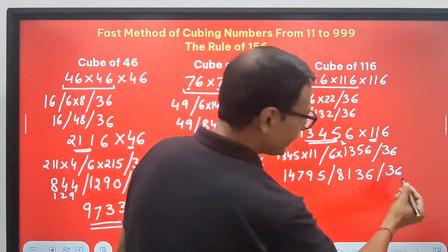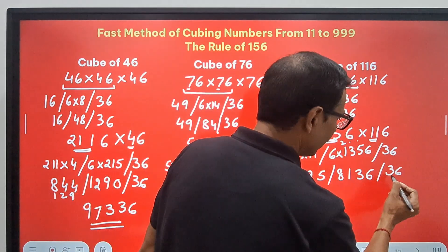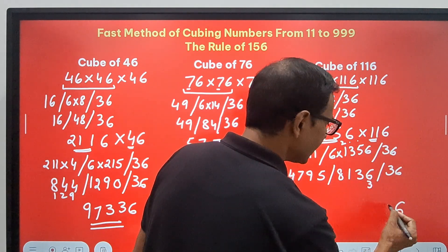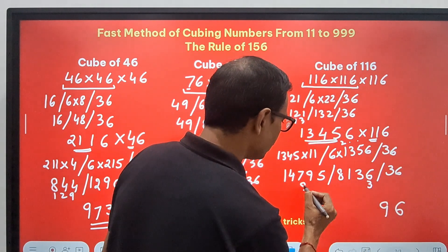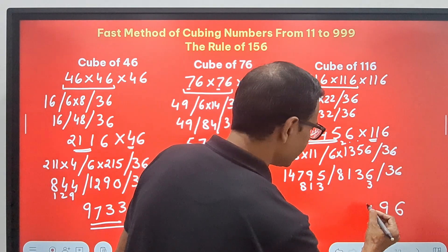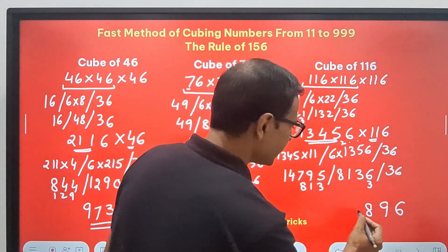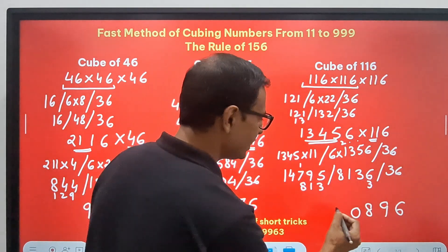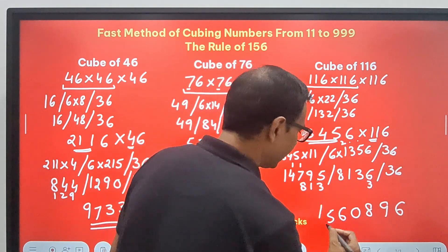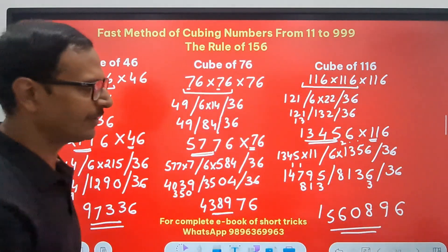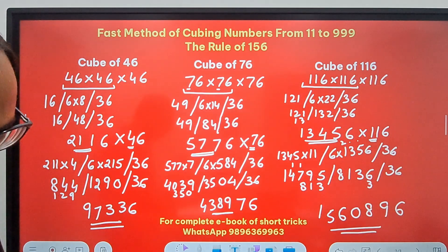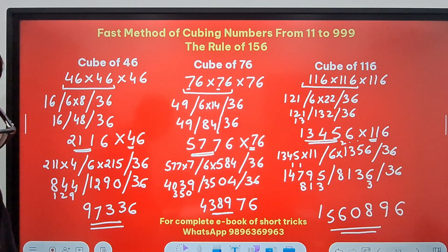So retain the 6, carry forward the 3 here, this becomes 9. 8, 1, 3 is to be carried forward here. So this becomes 8, and this becomes 10. 0, 1 carry means 16, 6, 1 carry means 5 and 1. Now pick up the calculators. 1, 5, 6, 0, 8, 9, 6 is the cube of 116.